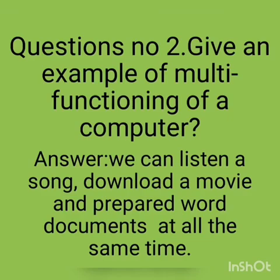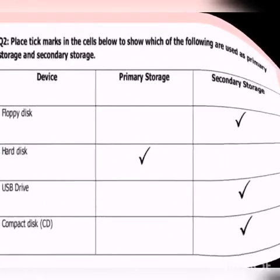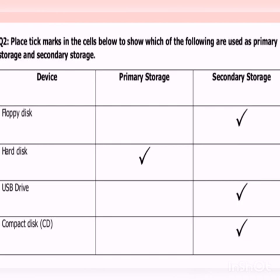This is called multi-functioning. Next is placing tick marks in the cells. Cells are called blocks. We have to place ticks. Primary storage is primary, and secondary storage is secondary. A floppy disk — it is secondary storage. We have a hard disk — it is primary storage.